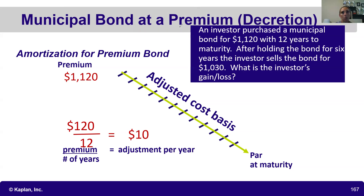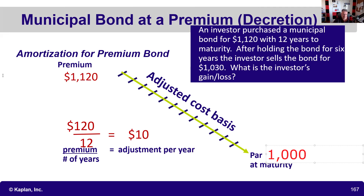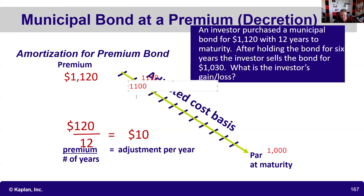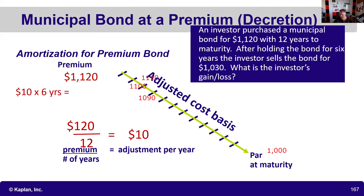So we start at $1,120 and step down $10 each year toward the $1,000 maturity value: year one is $1,110, then $1,100, then $1,090, and so on. After six years, we should have written off $10 a year — that's $60 decreted. The adjusted cost basis after six years is $1,060.